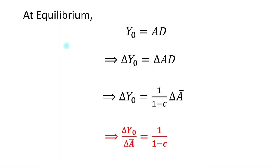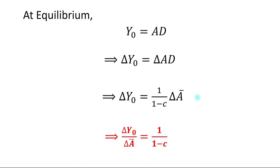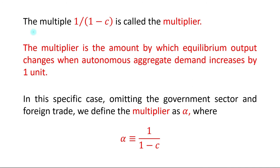At equilibrium, Y₀ is equal to AD, so we can write change in Y₀ is equal to change in aggregate demand, which is 1 upon 1 minus MPC times change in A-bar. Solving this, we get that change in equilibrium level of output upon change in autonomous spending is equal to 1 upon 1 minus MPC. The multiplier 1 upon 1 minus MPC is called the multiplier.